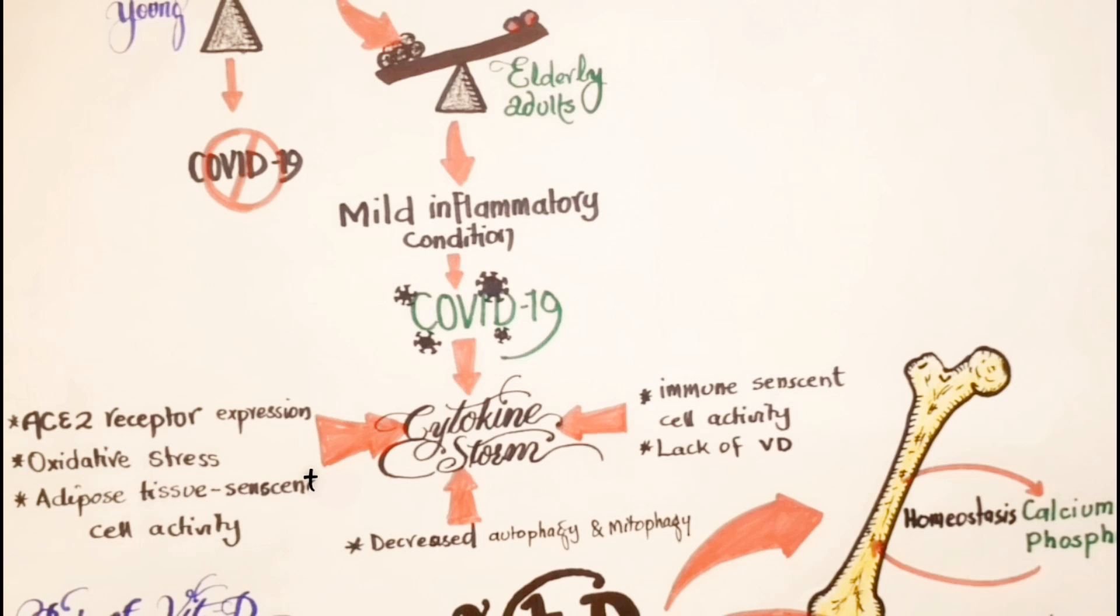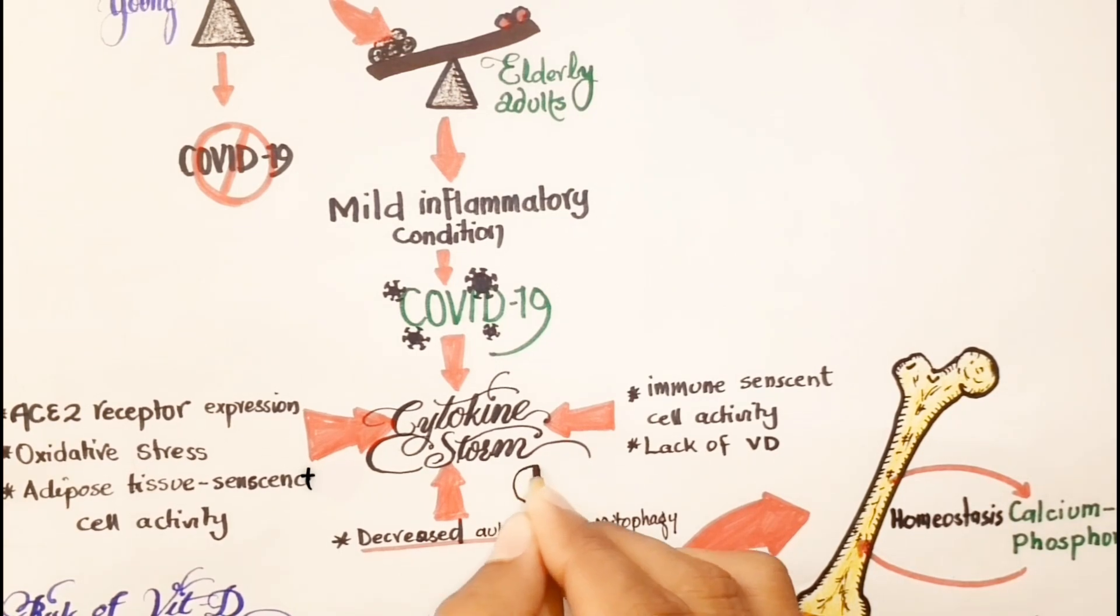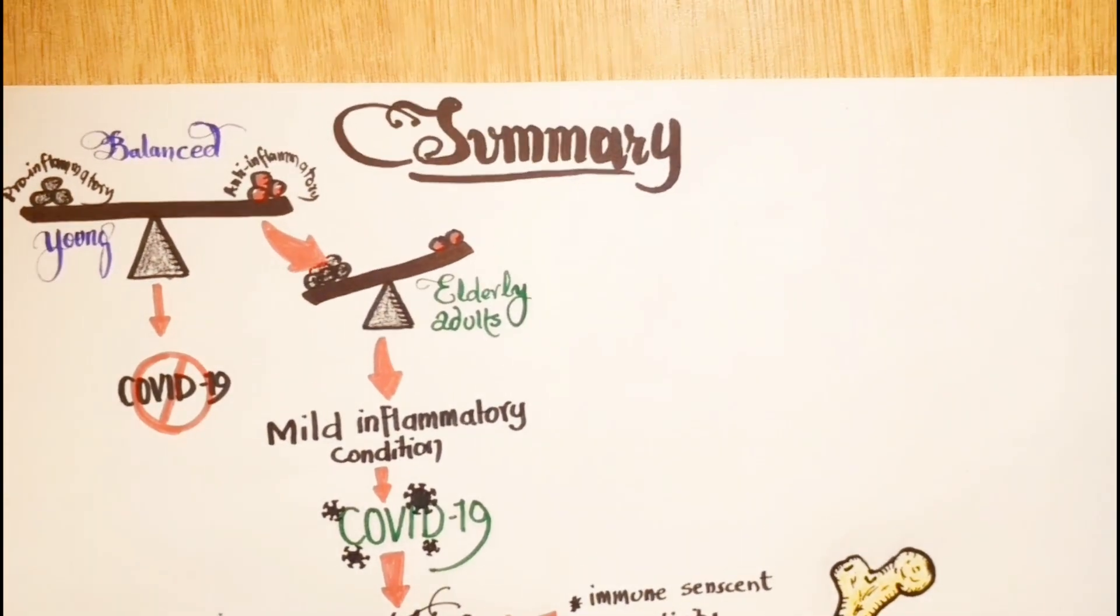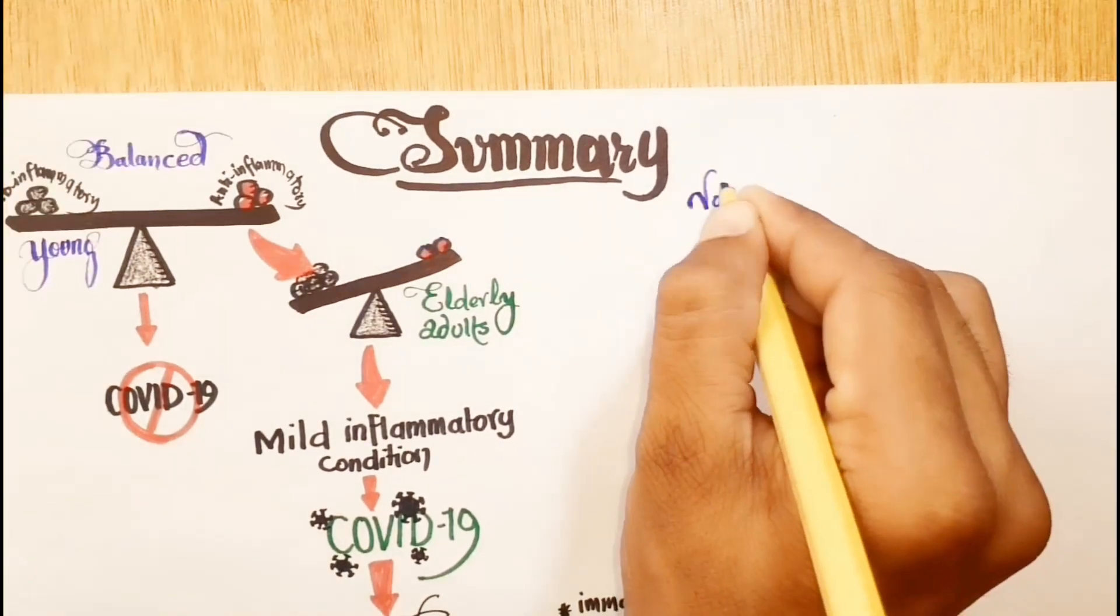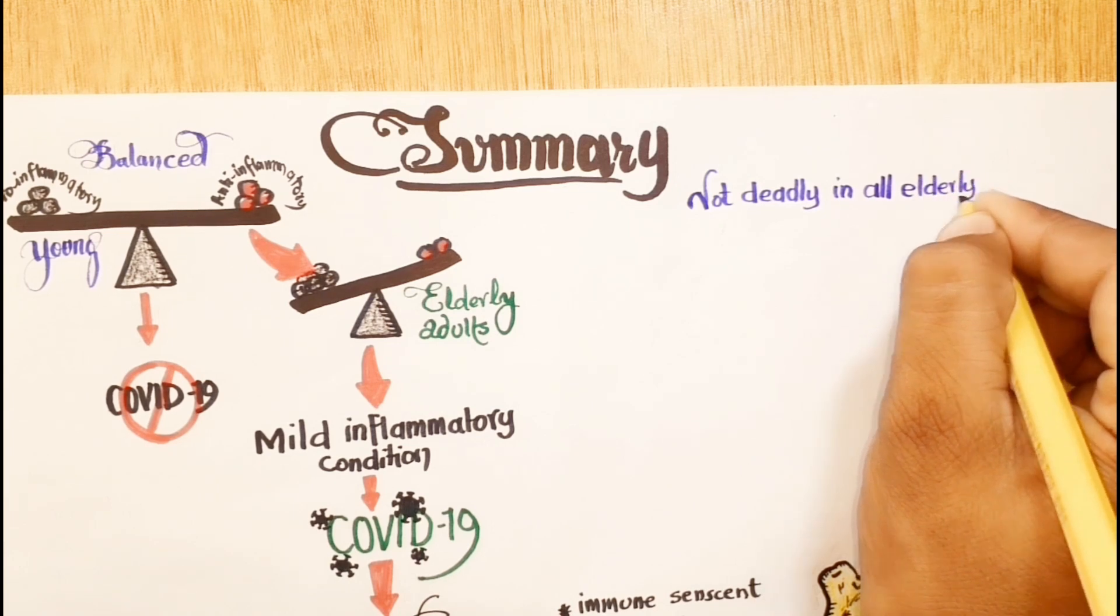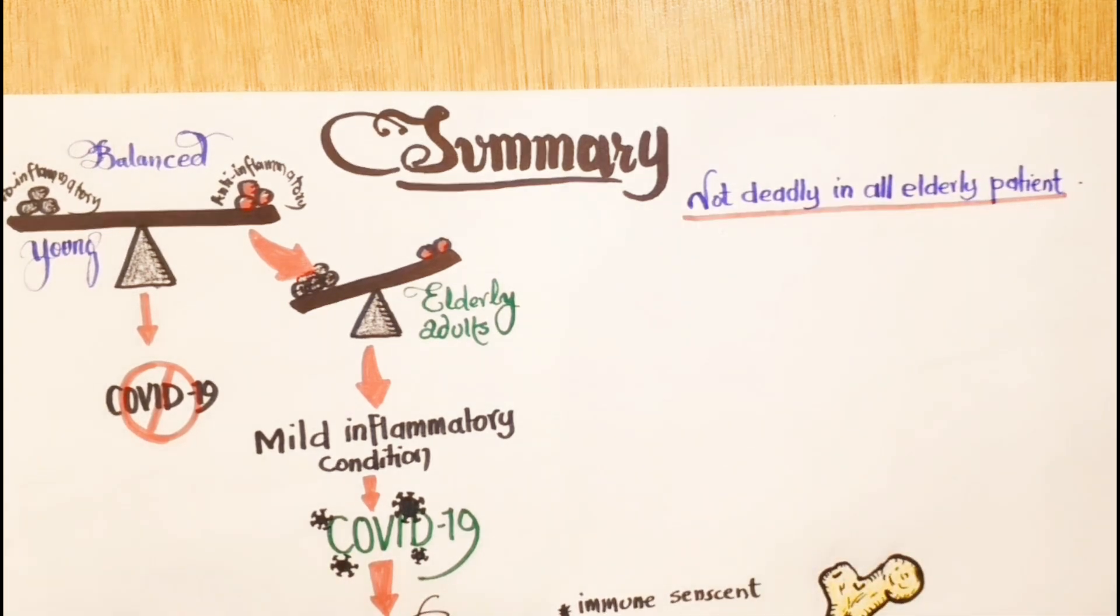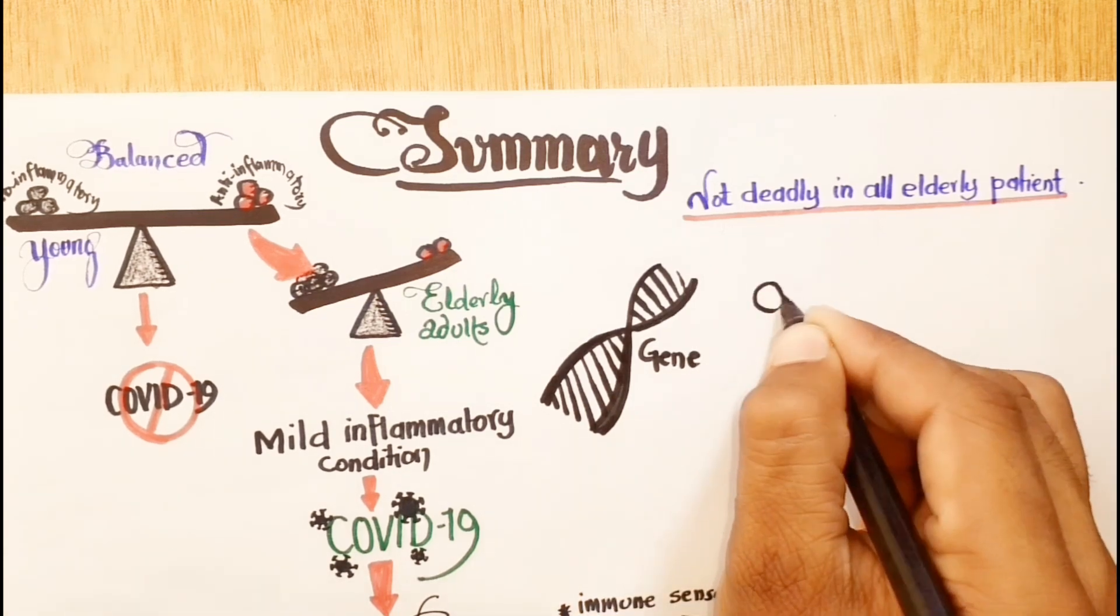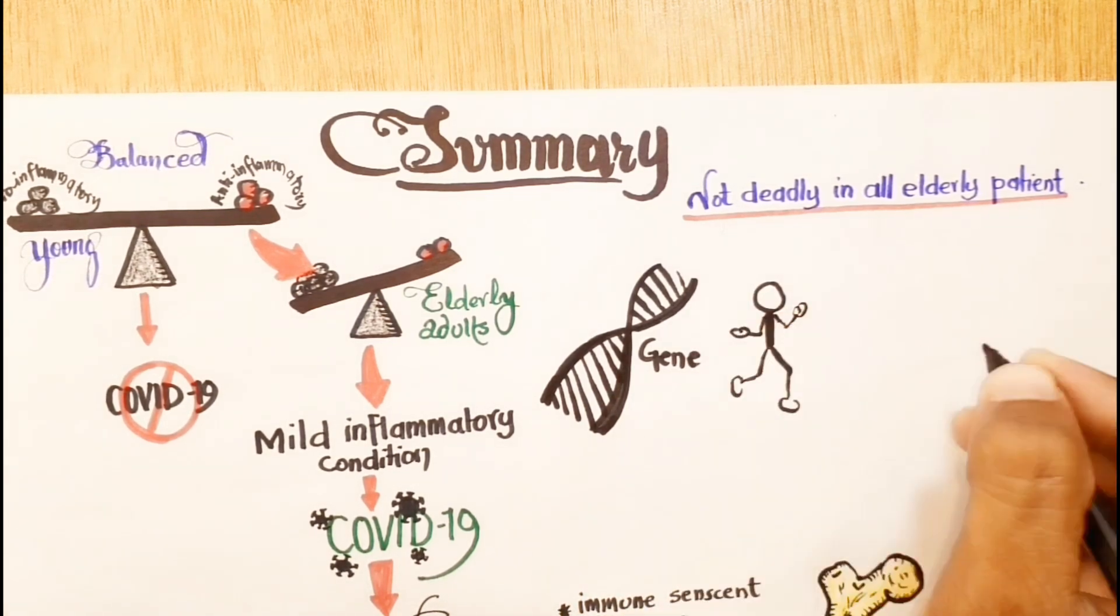This high amplitude of immune response in elderly adults can favor induction of cytokine storm and death in severe and critical cases of COVID-19 infection. Nevertheless, COVID-19 infection is not deadly in all elderly patients because the aging process is dependent on several markers, including genes.